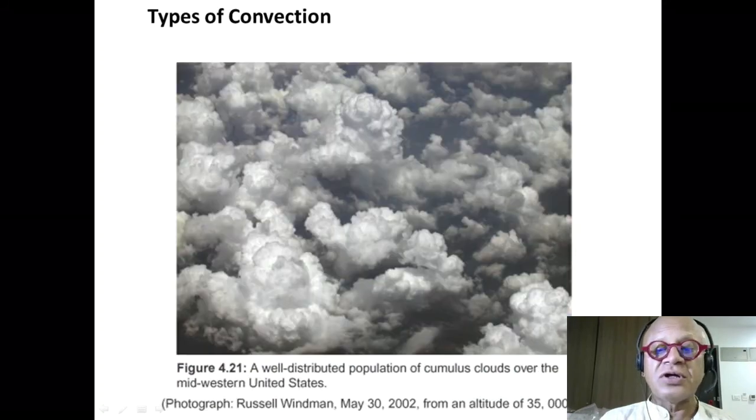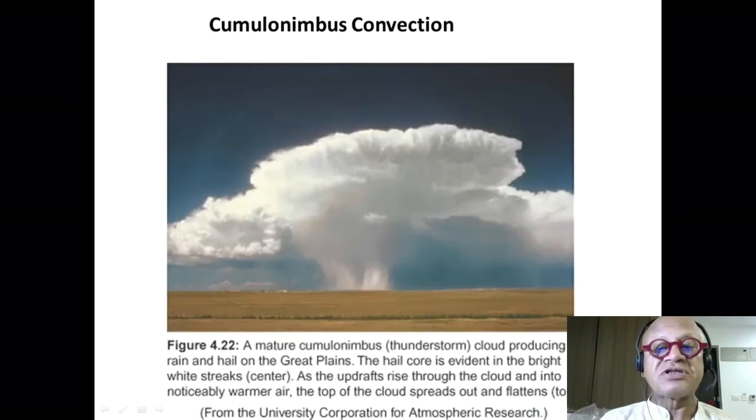You can see the clear difference between the cumulus clouds and cumulonimbus clouds. Rain is pouring down here. This is a thunderstorm. Hail and rain are falling down all the way to the ground. This is obviously not going all the way up and having the typical anvil structure.